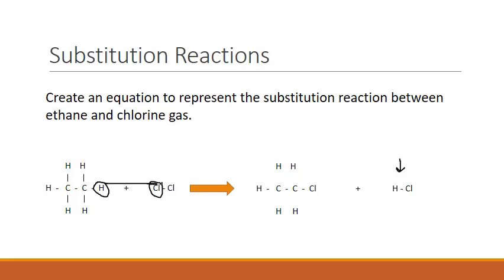Now, we've got probably several different outcomes. Like this is one particular outcome. Because we name things, we've got ethane, chlorine gas, and we name this 1-chloroethane and hydrochloric acid.